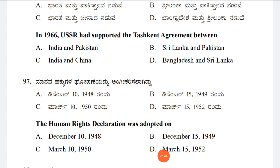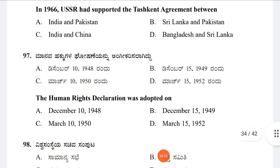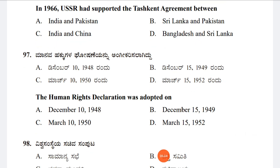Question 97: The Universal Declaration of Human Rights was adopted on Option A: December 10, 1948, Option B: December 15, 1949, Option C: March 10, 1950, Option D: March 15, 1952. The answer is Option A, December 10, 1948.